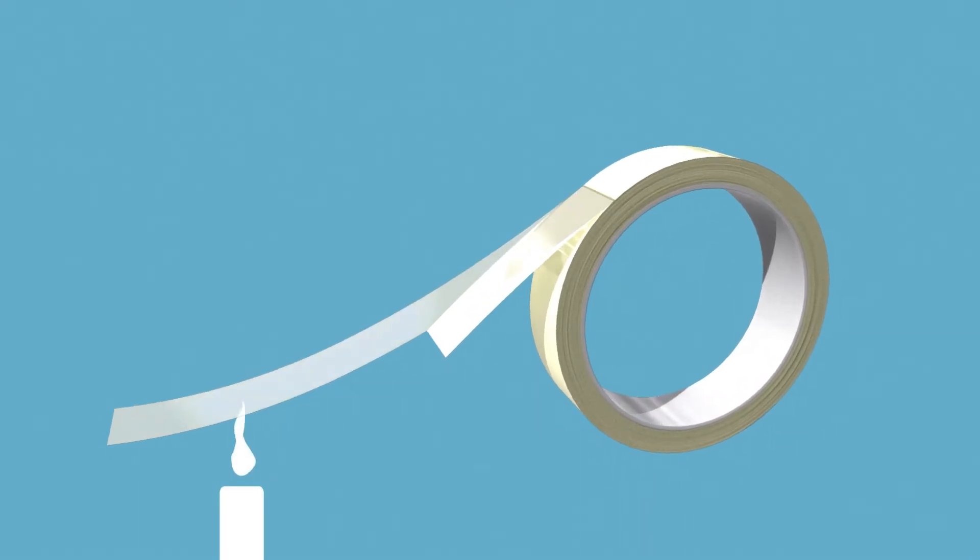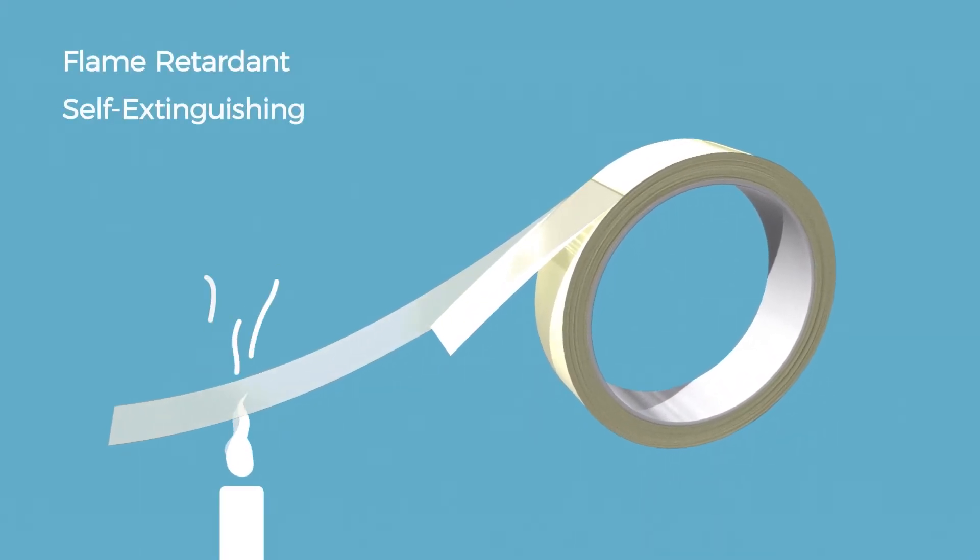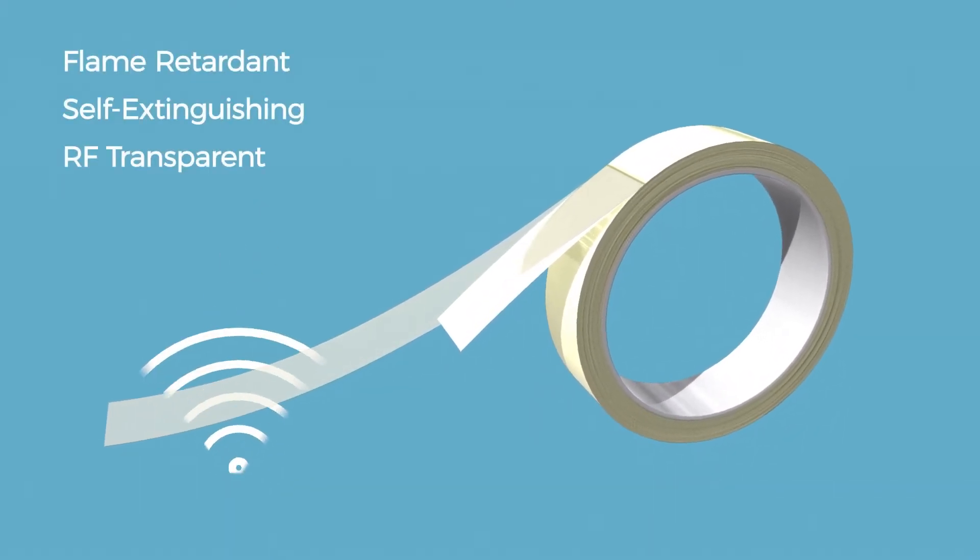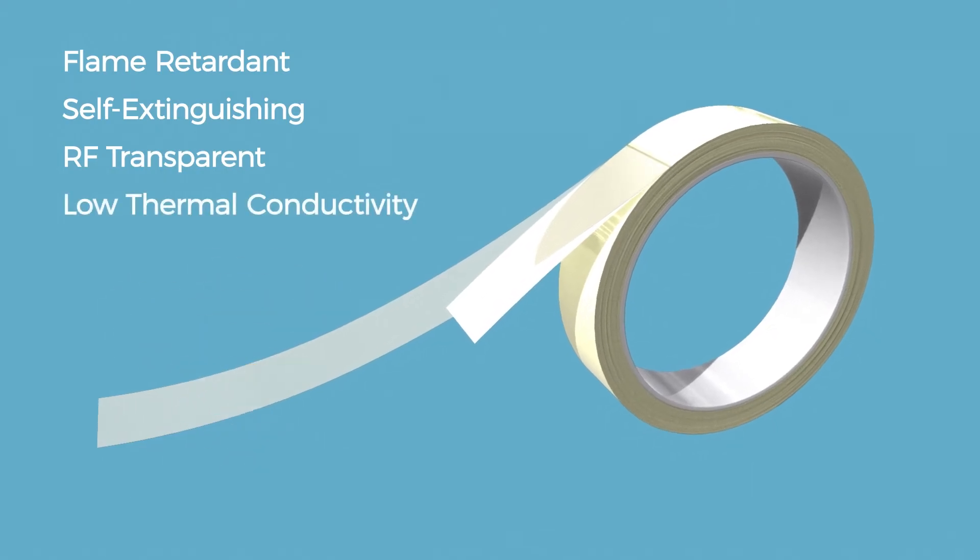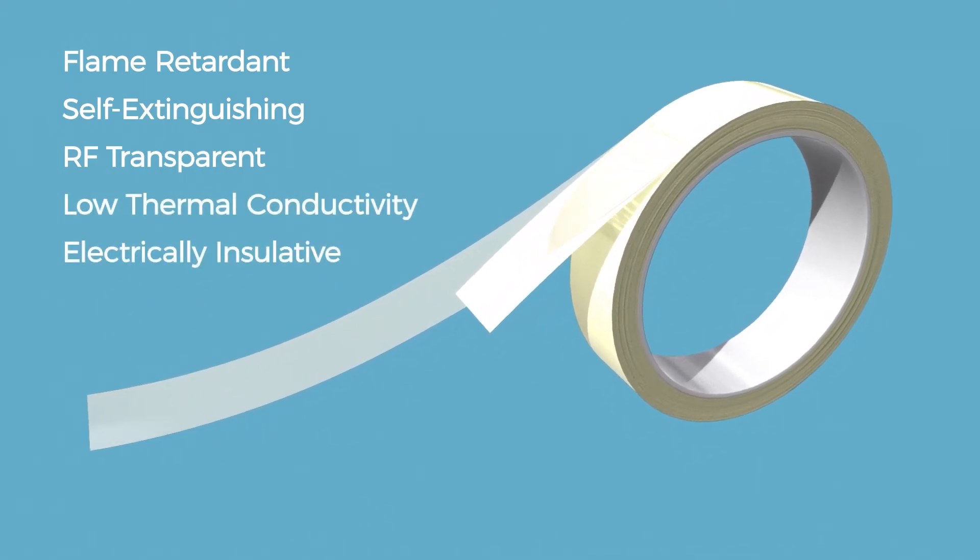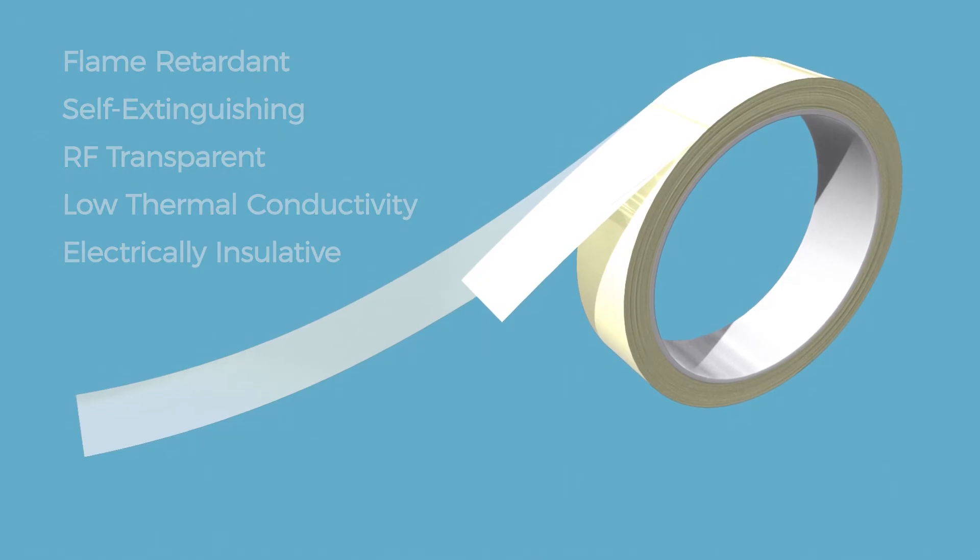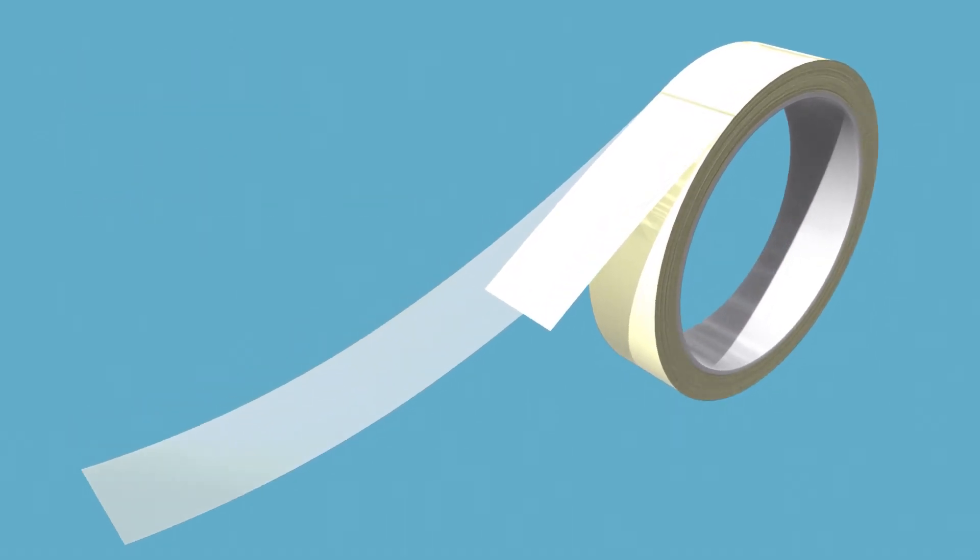Aero zero itself is inherently flame retardant and self extinguishing. It is RF transparent, has low thermal conductivity, and is electrically insulative. But the real magic of this technology comes to life when combined with other substrates.